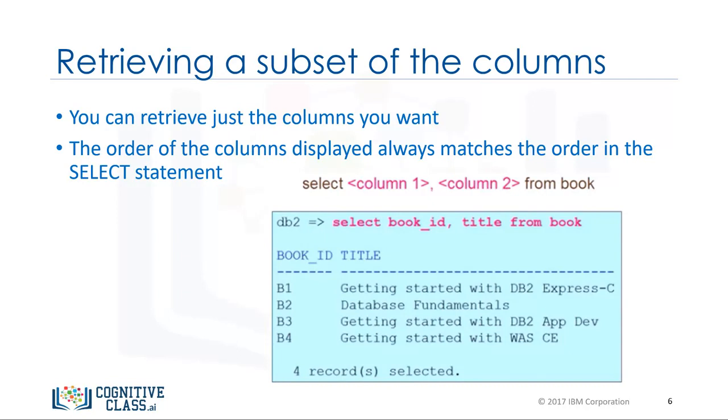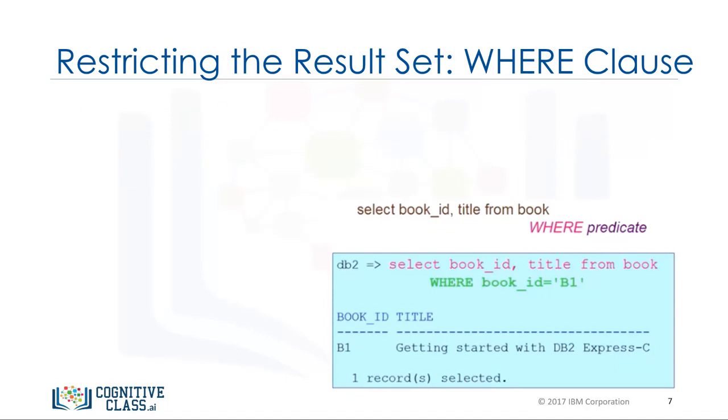However, what if we want to know the title of the book whose book underscore ID is B1? Relational operation helps us in restricting the result set by allowing us to use the clause WHERE.